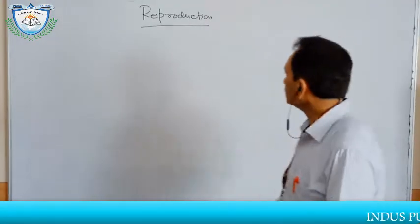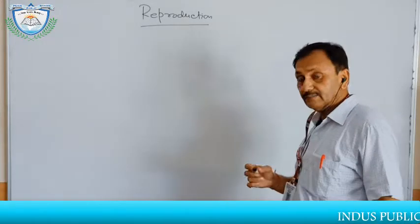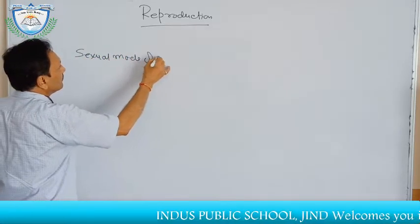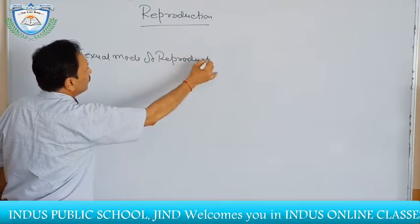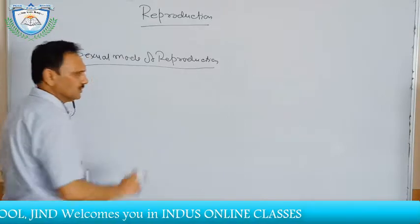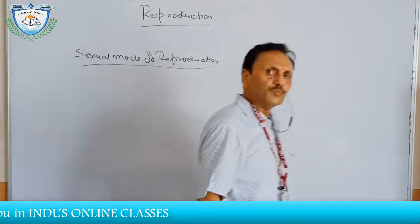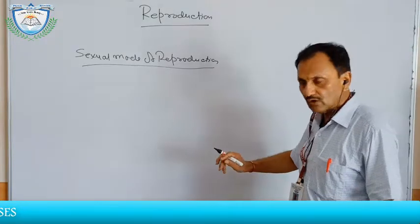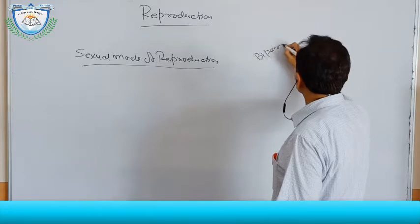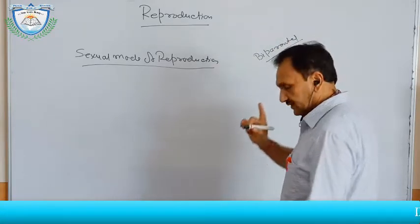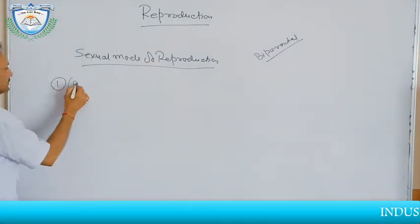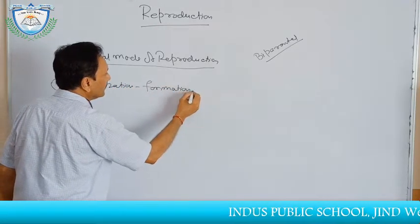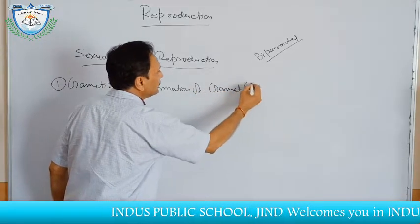Good morning students. Today we will discuss reproduction — specifically the second part: the sexual mode of reproduction. In the previous lecture we discussed the asexual mode of reproduction, which is monoparental. The sexual mode of reproduction, by contrast, is biparental. The first step of sexual reproduction is gamete formation, and the gametes produced are haploid.